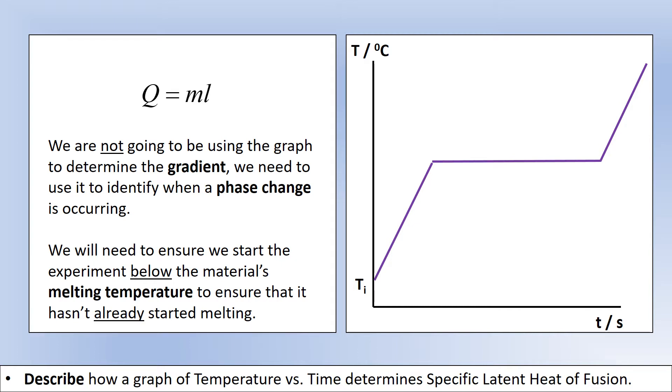In terms of thinking practically, this means we need to make sure we start with the material well below its melting point so we haven't already started melting it. So stearic acid has a melting point of about 65 degrees so we started the experiment at room temperature, so that wasn't a problem.